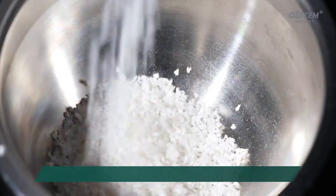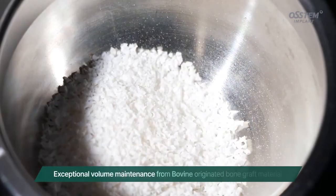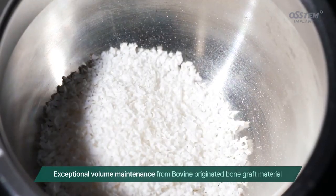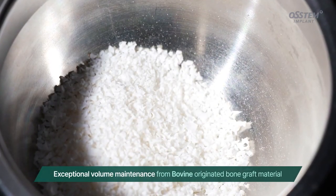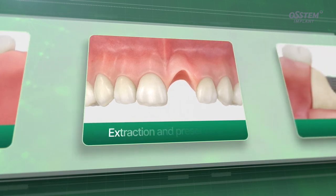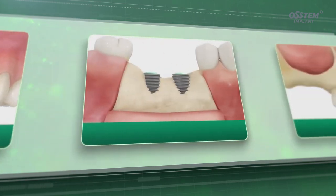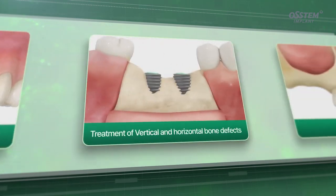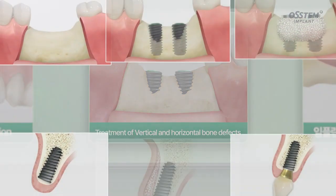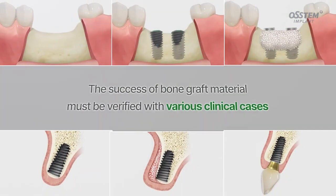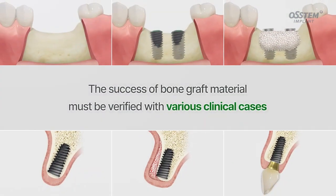Bovine-originated bone graft AOS has excellent volume maintenance. AOS is designed for bone grafting in the socket after tooth extraction, treatment of vertical and horizontal bone defects, and for the sinus lift.